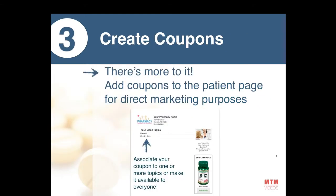There's more to it — you can add coupons to the patient page for direct marketing purposes. As you may have noticed when I was showing the patient page earlier, there was a section for a coupon. The coupon here is a vitamin B12 coupon at the bottom right of the page. You can create coupons and associate them to specific topics. For example, a $4 off vitamin B12 bottle coupon can be sent only to people who received the diabetes video, or made available to anyone regardless of topic.